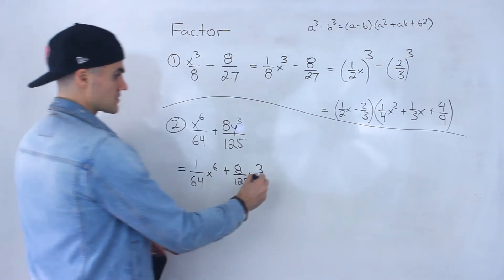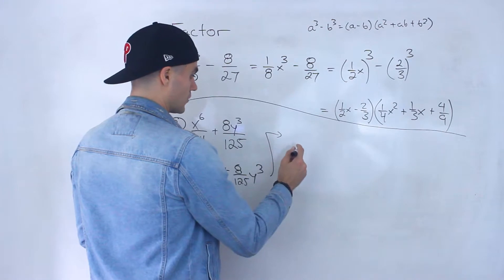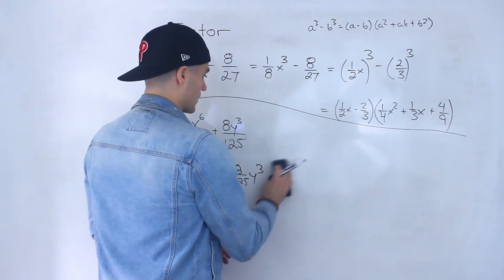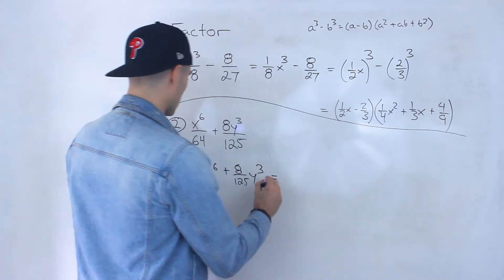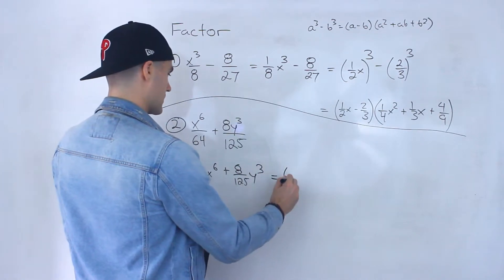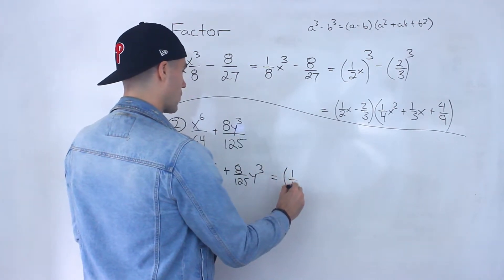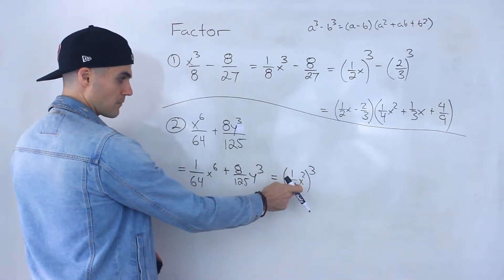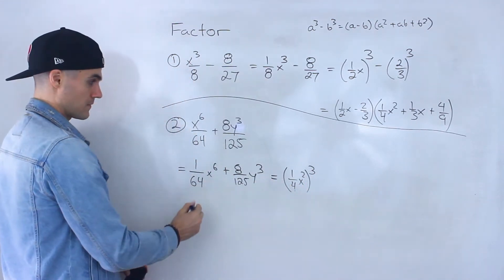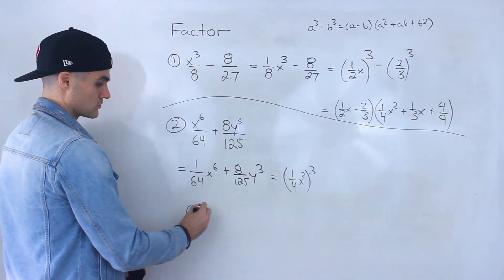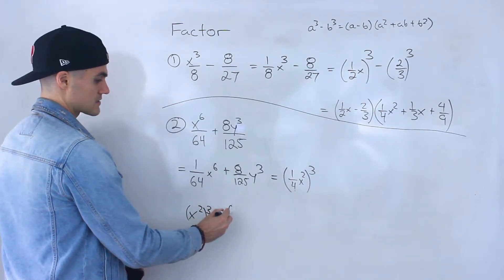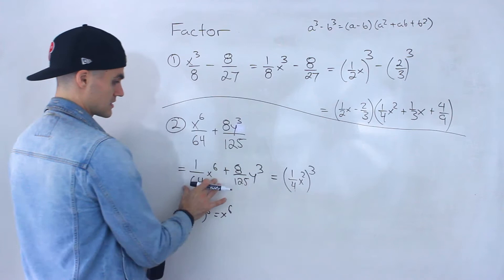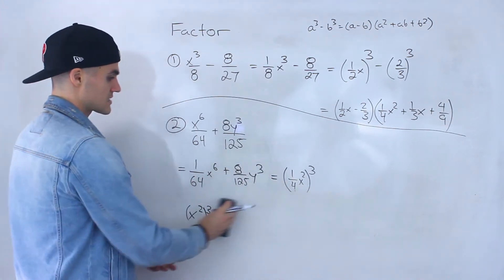And then now what I'm going to do is I'm going to take this and I'm going to rewrite it. This would be 1 over 4x squared to the power of 3. Right? Because 1 over 4 to the power of 3 is 1 over 64. And then x2 to the power of 3 is x to the 6. So this expression and this are the exact same thing.